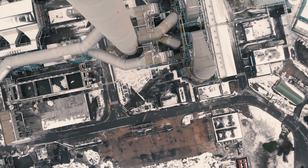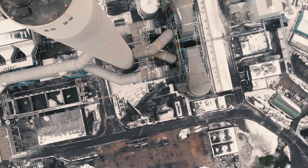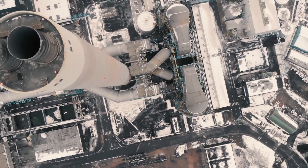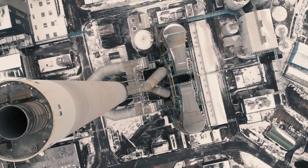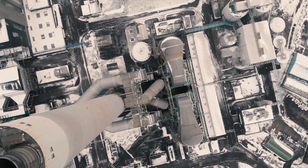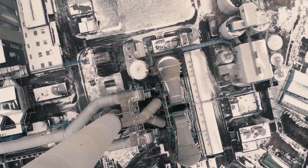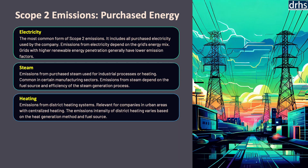The third source is heating. Purchased heating, often in the form of hot water or direct heating services, is another source of scope 2 emissions. These emissions arise from the energy used to produce and distribute heat, typically through the burning of fossil fuels. Organizations can reduce heating-related scope 2 emissions by improving insulation, upgrading to more efficient heating systems, and using heat generated from renewable energy sources. For example, district heating systems that utilize waste heat from industrial processes or biomass can significantly lower the carbon footprint associated with heating.